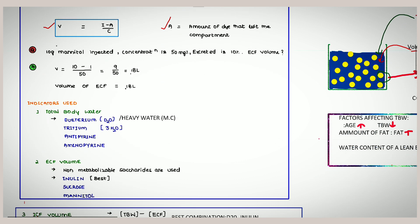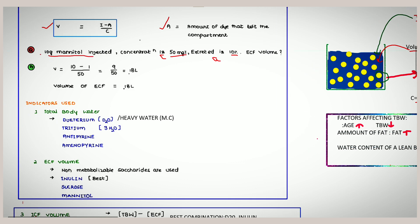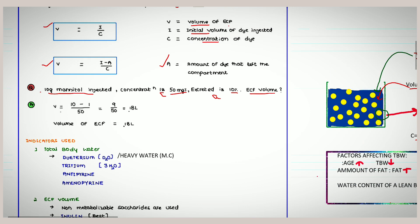Let us work through an example using mannitol to calculate ECF volume. We inject 10 grams of mannitol. The concentration obtained is 50 mg percent, and excretion is 10 percent. So A = 10% of 10 g = 1 g. Using the formula: V = (I − A) / C = (10 − 1) / 50 = 9 / 50 = 0.18 liters.